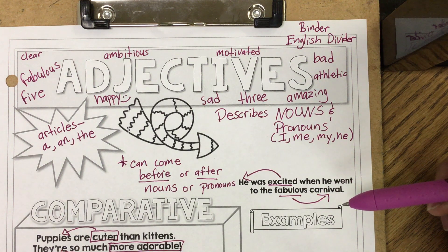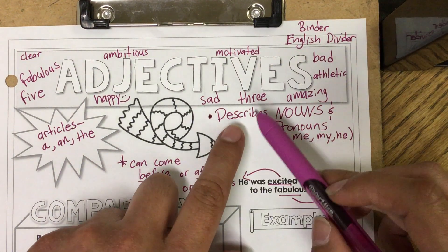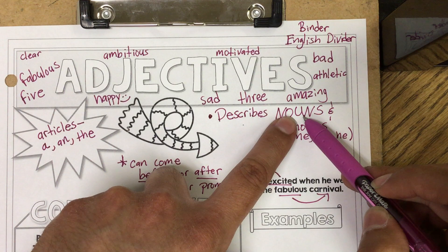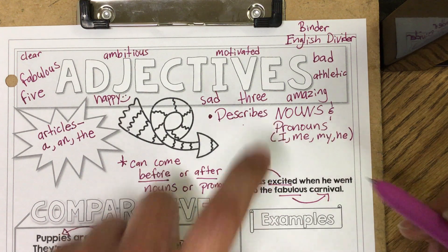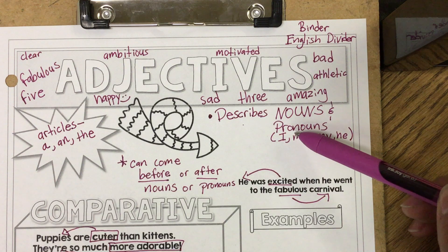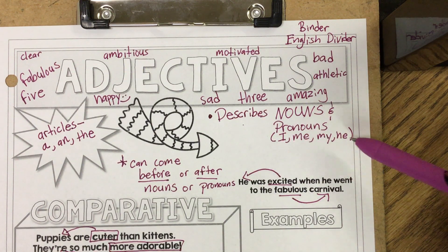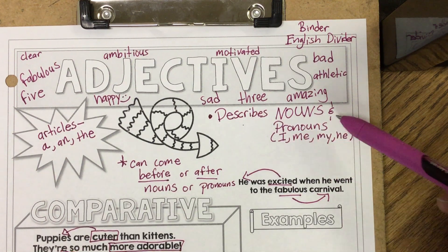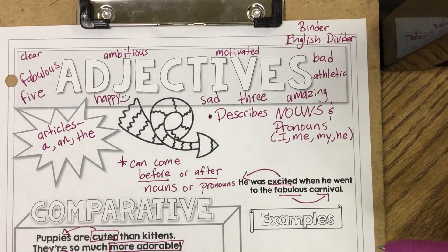We're going to write the definition of adjectives: describes nouns. Remember, a noun is a person, place, or thing. It also describes pronouns. Pronouns are words like I, me, my, he, she, and they — and there are more than these. Please write 'describes nouns and pronouns' and in parentheses write I, me, my, and he.